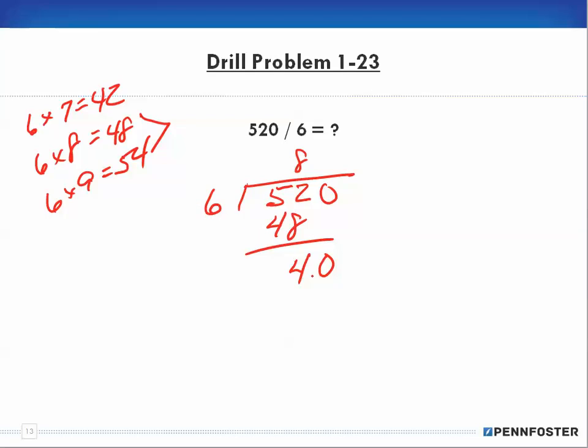Now I bring down my other digit, my next digit. If there were more digits I'd just keep going through this process again and again. So now 6 into 40. 7 is too great because that's 42. 6 into 40 goes 6 times, which is 36. We subtract again and we end up with a remainder of 4. Our answer here is 6 can go into 520 eighty-six times, and I have a remainder of 4.